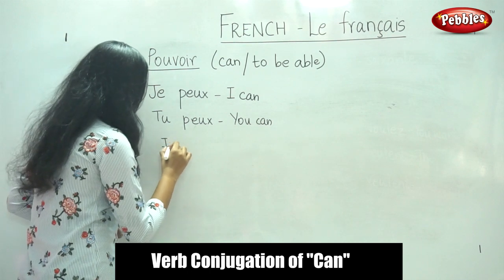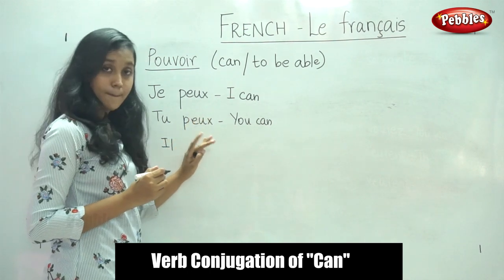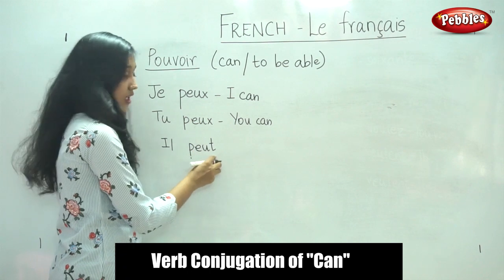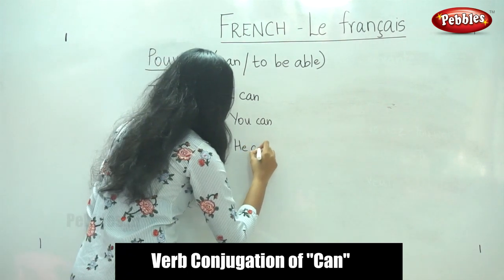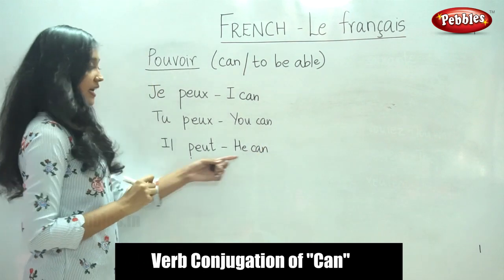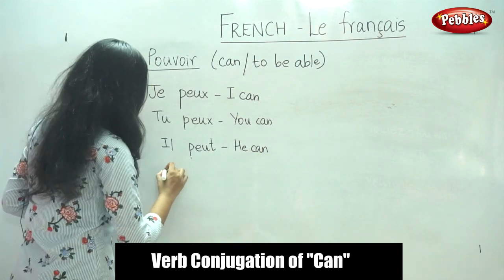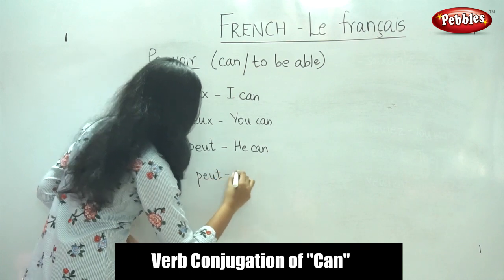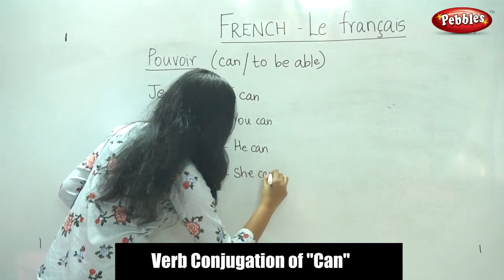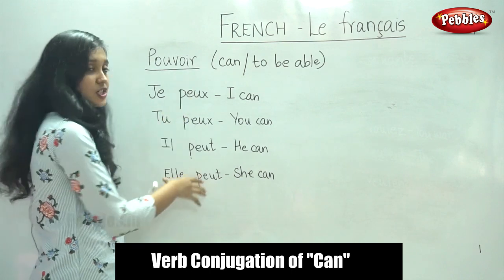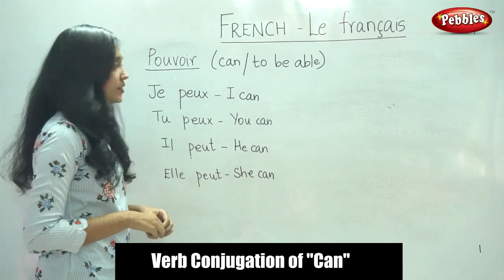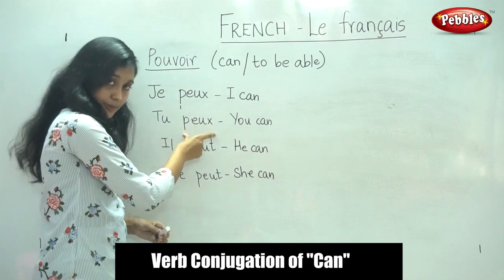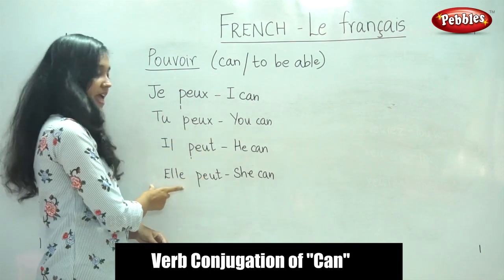For IL, the pronunciation is the same — it is IL PEUT — but the spelling ends with T-E. IL PEUT means 'he can.' For ELLE, it is ELLE PEUT, meaning 'she can.' So, as I told you, it is similar to the VOULOIR verb, which is why I am teaching both verbs together. The conjugation is almost similar.